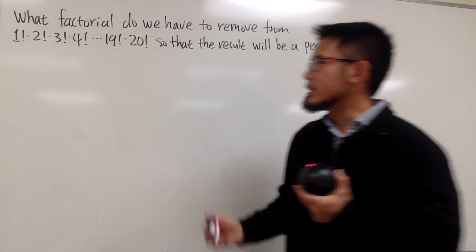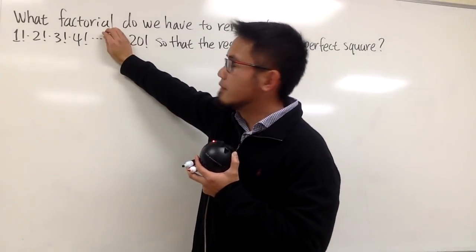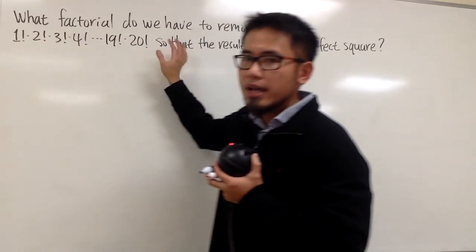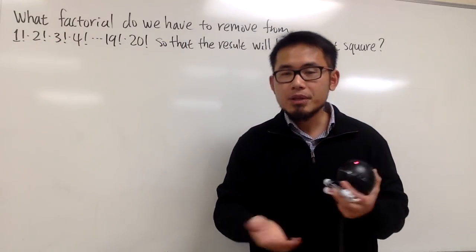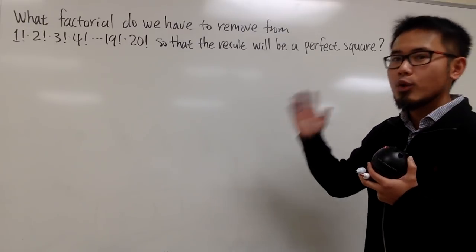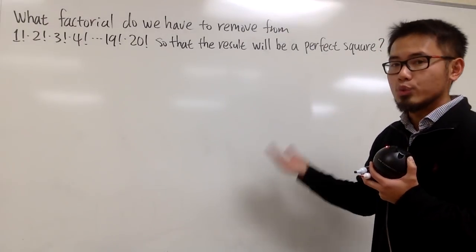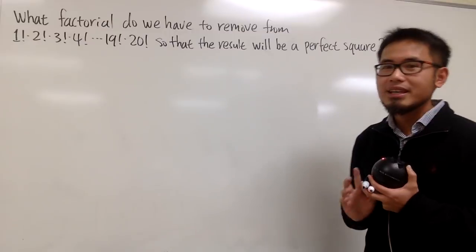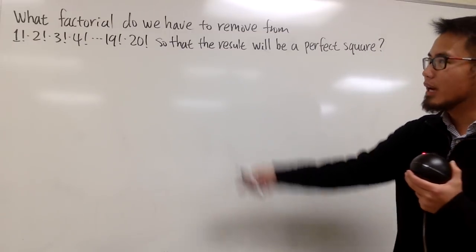So an example is, can I take away 19 factorial, and then you multiply out the rest, and that final number is a perfect square. So that's the idea. Think about it, what factorial do we have to take away from that list? And as always, please pause the video and try this first.